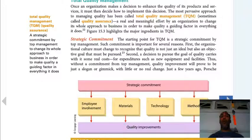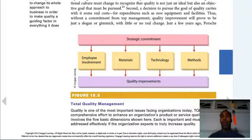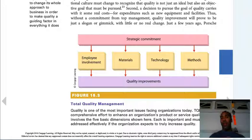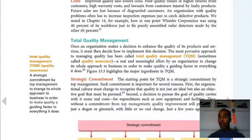Total quality management is a strategic commitment by top management to change its whole approach to business in order to make quality a guiding factor in everything it does. Quality first — we're focusing on quality, not quantity. When I interview people I ask: quality or quantity, you can't pick both. Typically people pick quality, and that's the right answer. Without quality, customers leave — if I sell bad quality, although I sold 20, ten of them will go to another company because my quality was not good.